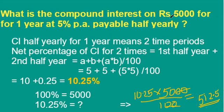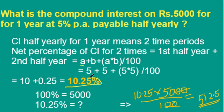See this problem: what is the compound interest on Rs. 5000 for 1 year at 5% per annum payable half yearly? For 1 year half yearly means we have to calculate the interest for each half year separately — first half year plus second half year. For these 2 time periods, the net percentage is A plus B plus AB by 100. With a rate of 5% per half year, we get 10.25%. Since 100% equals Rs. 5000, by cross multiplication 10.25% equals compound interest of Rs. 512.5.